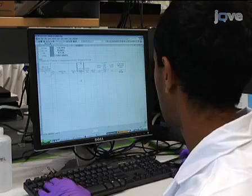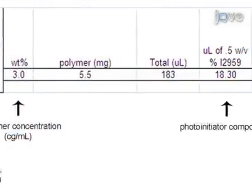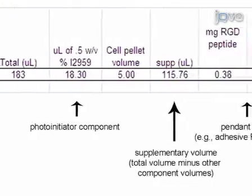Next, use a spreadsheet program such as Microsoft Excel to calculate the amount of polymer and cross-linker needed.